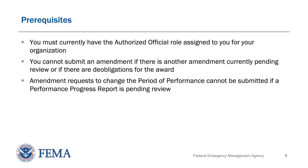Now that we have introduced the different types of amendments and distinguished a few key details to note before submitting, let's take a quick look at the prerequisites for submitting an amendment. The most important thing needed to submit an amendment is that you must currently have the authorized official role assigned to you for your organization. In addition, you cannot submit an amendment if there is another amendment currently pending review or de-obligations for the award. Lastly, amendment requests to change the period of performance cannot be submitted if a performance report is pending review.